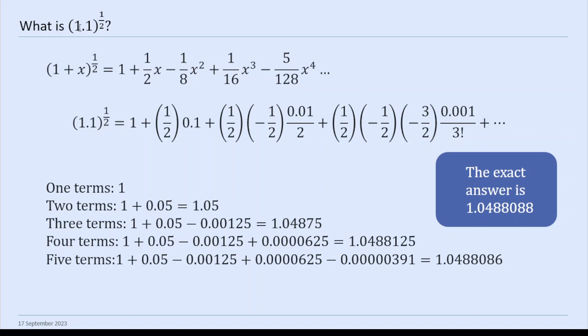So we're just going to do an example here, which is 1.1 to the power of 1 half. So in this case, we're putting in x as 0.1. So this is the equation we've got on the last page. These are the sort of terms as they come out. And then with the exact answer, if you actually work out 1.1 to the power of 1 half with a calculator or computer or whatever, you come to this.